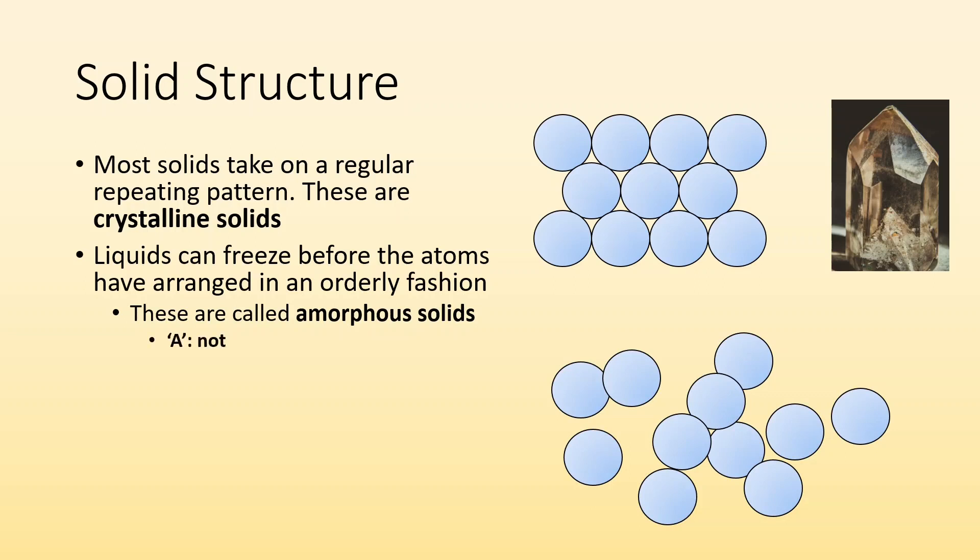The A prefix means not. Morph means shape. So amorphous means it's without a definite shape. So glass is an example of an amorphous solid.